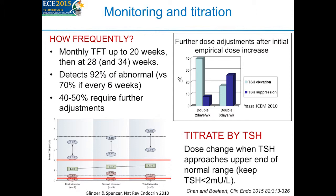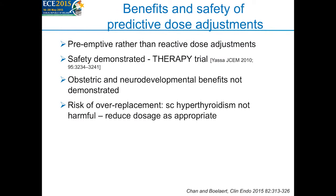We titrate by serum TSH, as free T4 measurements are much more liable to variation. In the first trimester we aim to keep serum TSH below 2, and in subsequent trimesters below 2.5. These are preemptive dose changes rather than waiting for serum TSH to become abnormal. By monitoring regularly, even if we slightly over-replace, we will pick it up because we recheck thyroid function after four weeks, and mild subclinical hyperthyroidism is not thought to be harmful.